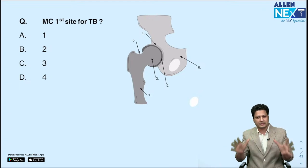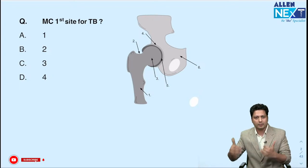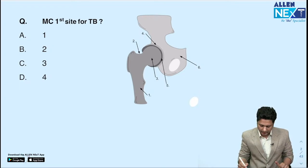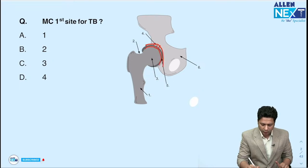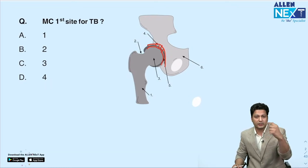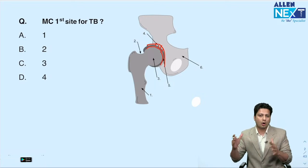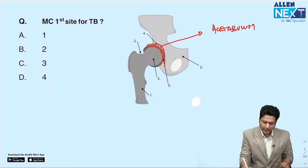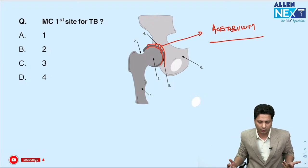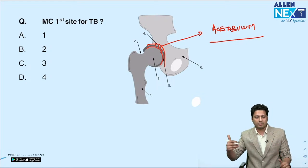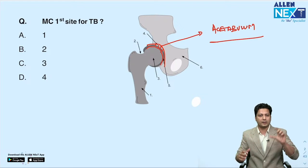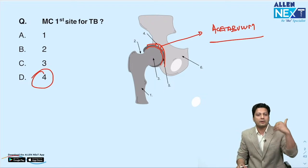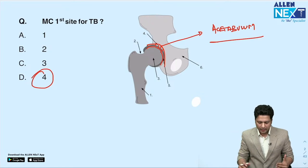A basic question asked is: what is the first site most commonly affected by tuberculosis of the hip joint? The hip joint is composed of the acetabulum, the head of the femur, and the synovium. The first and most common site to be affected is the acetabulum. In the question, structures were given numerical representations, and option four representing the acetabulum is the answer.